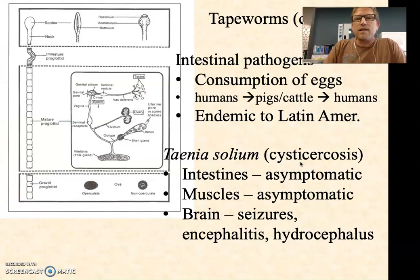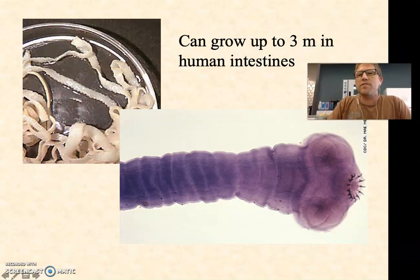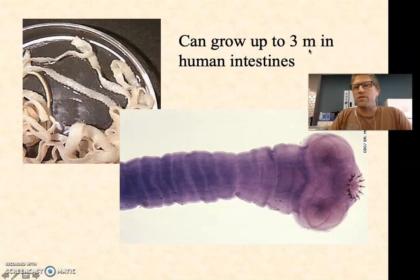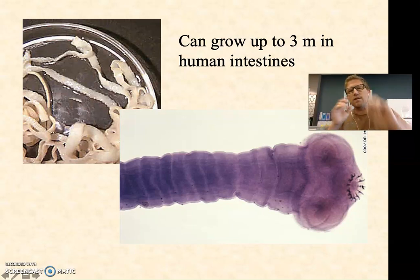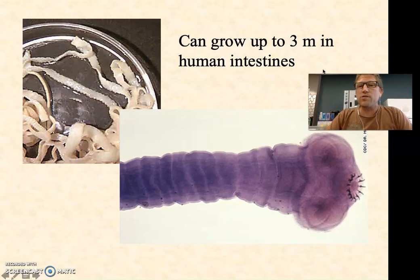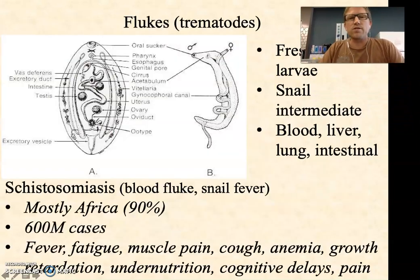These tapeworms — these cestodes like Taenia — can get up to three meters in the human intestines. These things can be absolutely enormous. You can see a picture of one that was expelled, with all the proglotids. You can see a close-up image colored showing the scolex head and the little teeth used just for attachment. There's no actual ingestion going on there — they absorb their nutrients directly through their skin.